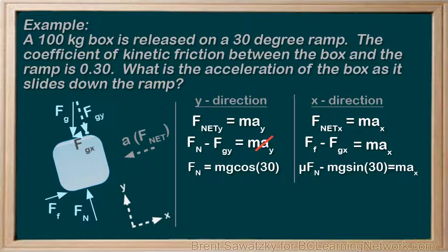Some people would be tempted to replace Fn at this point with MG. But that would be wrong on a ramp problem, as proven in our Y direction. Fn equals MG cos 30. So, let's substitute that in.